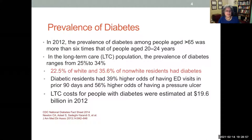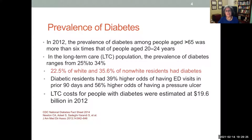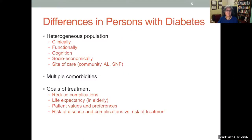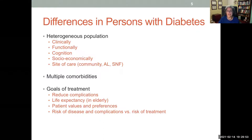Older adults are disproportionately affected by diabetes, six times more than younger people, and in the long-term care population that's even higher — 25 to 34 percent of residents have diabetes. Non-white residents are more likely to have diabetes. People with diabetes have a very high risk of pressure sores and are more likely to end up in the emergency room. The cost of diabetes in long-term care is very high — over 19 billion dollars even in 2012.